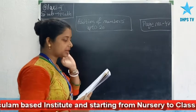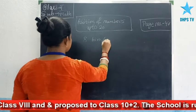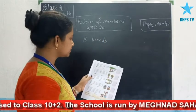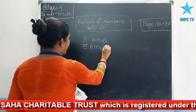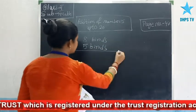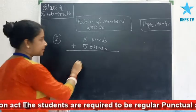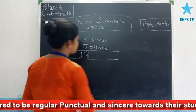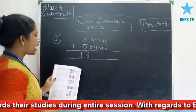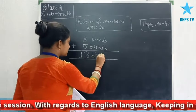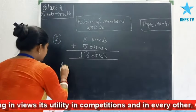How many birds are now sitting on a tree? At first, how many birds were sitting? 8 birds. Then how many birds joined? 5 more joined. So write 5 birds, then add the birds together. You have to add 8 and 5. You have learnt addition in your previous class, so you can add 8 and 5 easily. The answer is 13 birds. So the final answer is 13 birds.